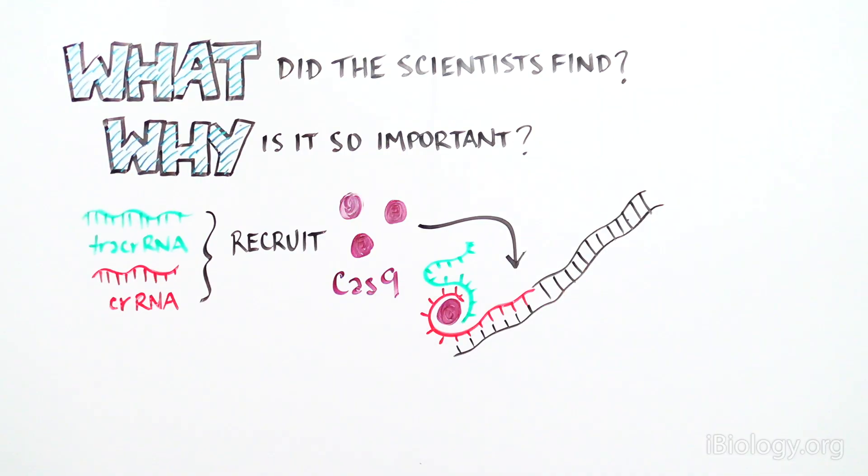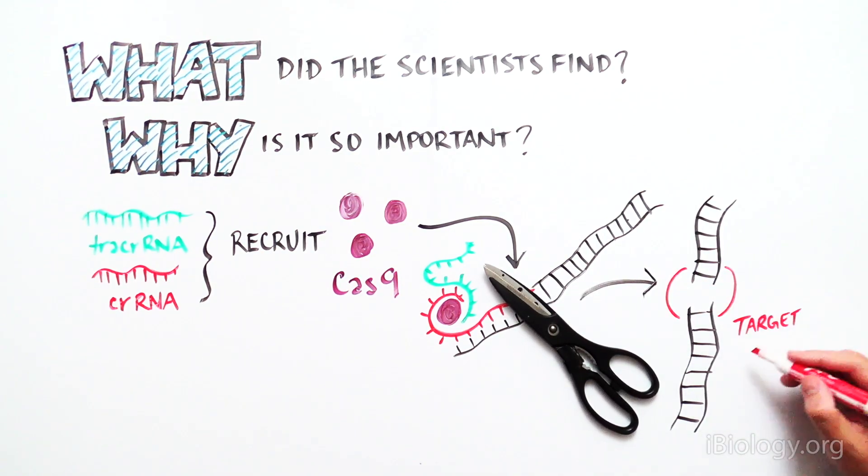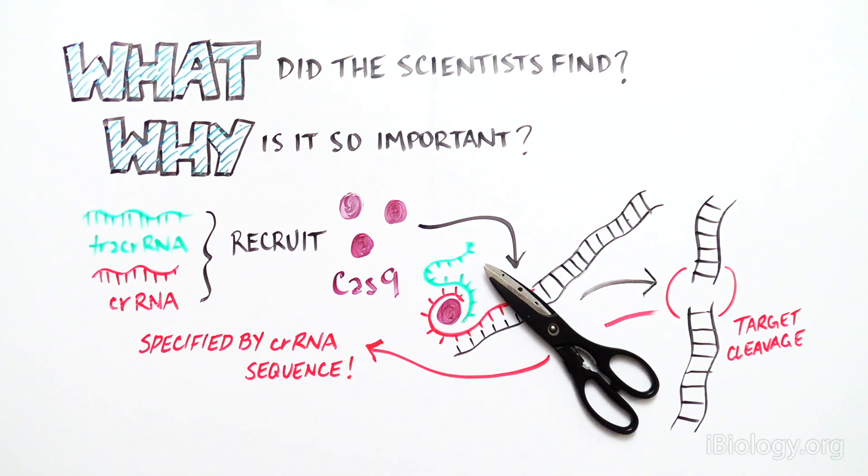Once at the proper DNA site, Cas9 cleaves both DNA strands. This cleavage occurs at a very specific and conserved position that is dictated by the sequence in the red CRISPR RNA molecule.